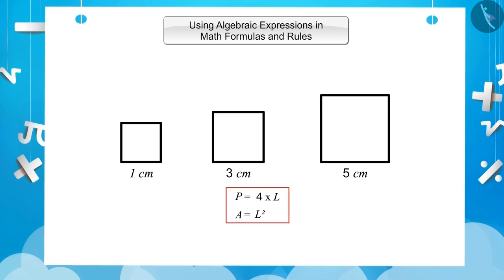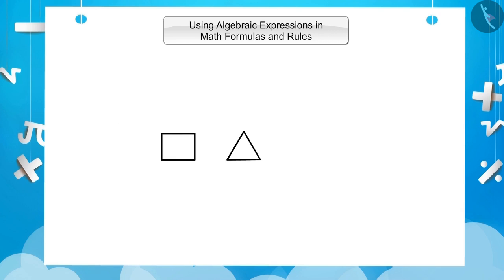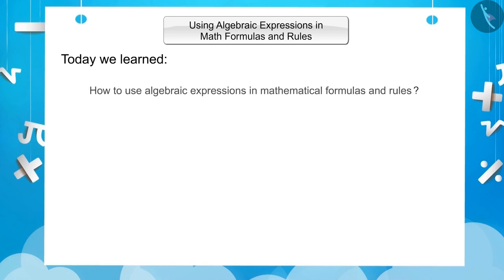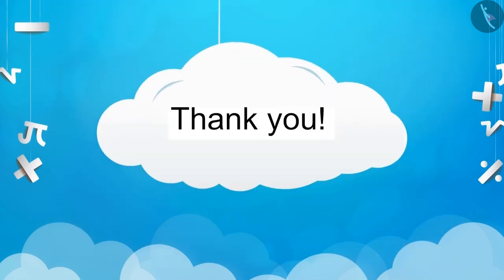Similarly, using algebraic expressions in the formulas and rules of mathematics, we can find the area and perimeter of rectangles, triangles, pentagons, and so on. Today we learnt how to use algebraic expressions in mathematical formulas and rules. Hope you understood this well. In the next video, we will understand them better with the help of some examples. Thank you.